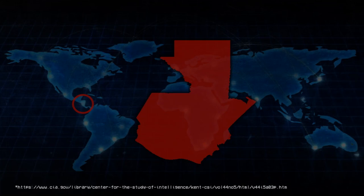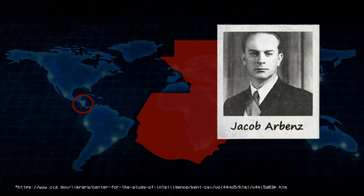1954. Guatemala. The CIA overthrows the democratically elected Jacobo Árbenz in a military coup. Árbenz had threatened to nationalize the Rockefeller-owned United Fruit Company, in which CIA Director Allen Dulles also owned stock. Árbenz is replaced with a series of right-wing dictators whose bloodthirsty policies will kill over 100,000 Guatemalans within the next 40 years.